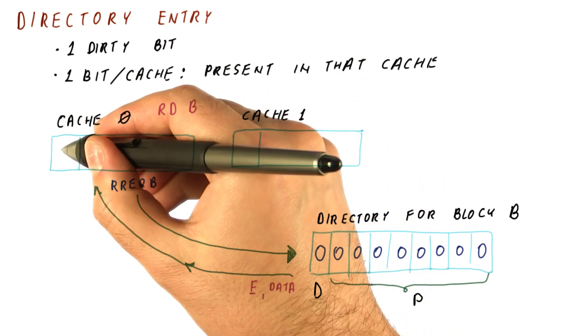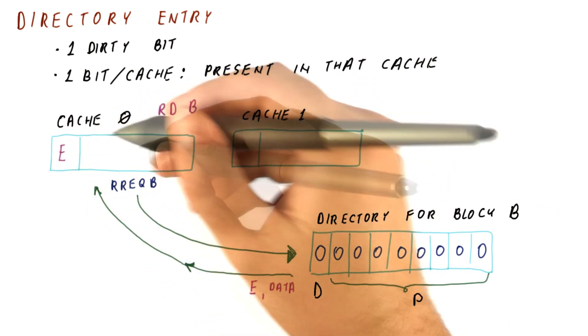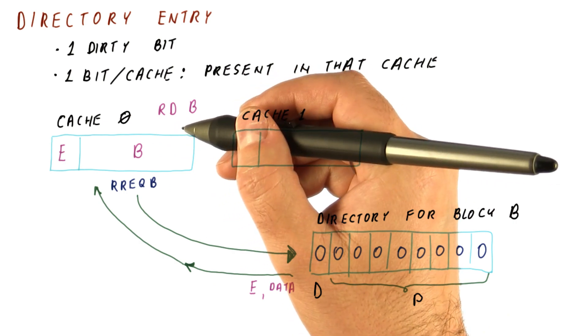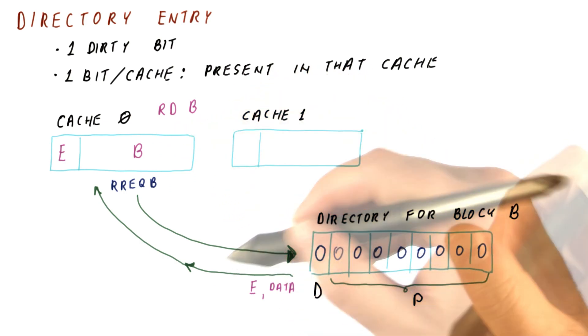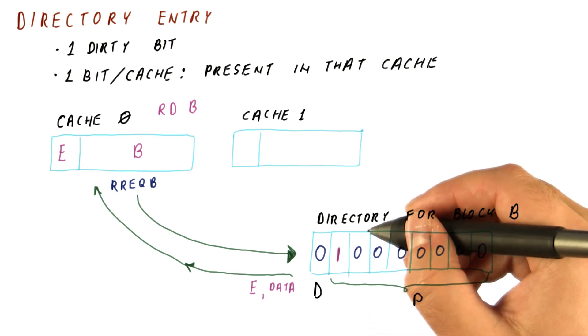And now if it has the exclusive state, it can put the block in that state and put the data for B here.